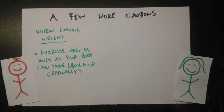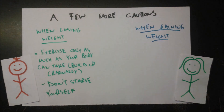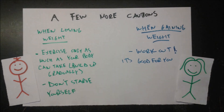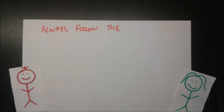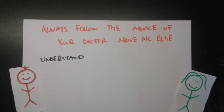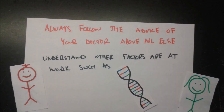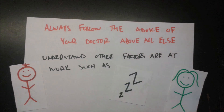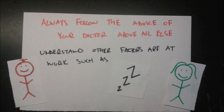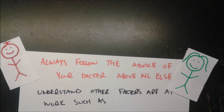Additional cautions: for losing weight, exercise only as much as you can handle and build gradually — don't starve yourself; if your body is hungry, feed it with calorically efficient choices. For gaining weight, keep exercising, eat more with smart choices like nuts or whole grains, and eat often. Above all, follow your doctor's advice. Other factors include genetics, how strenuous your average day is, and sleep. Remember: changing your weight is not a race — play it safe.